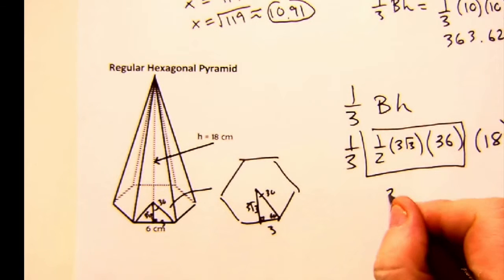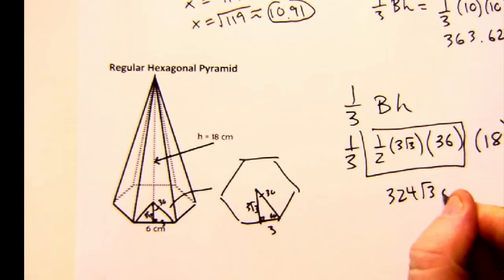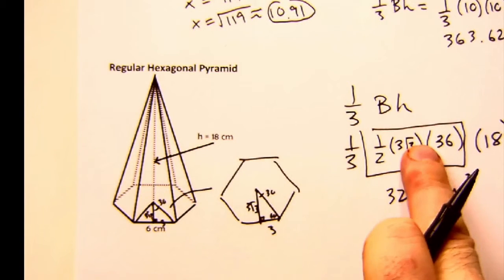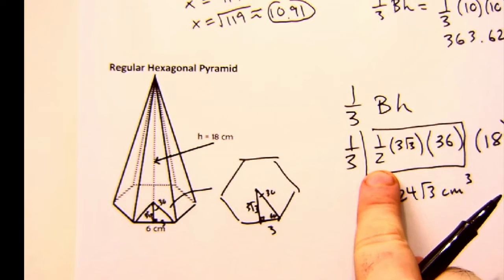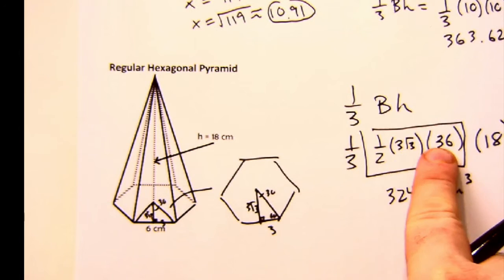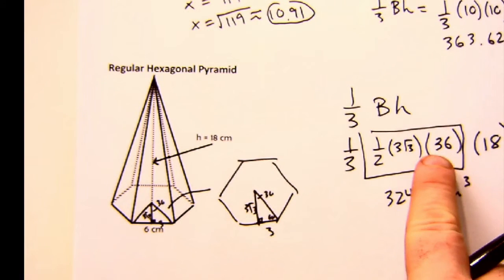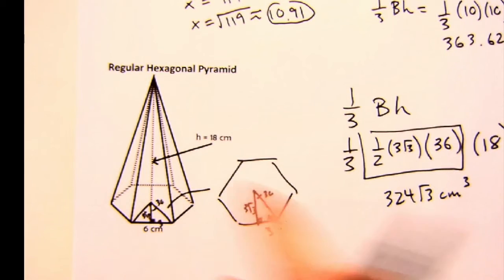I multiply all that together and I get 324 root 3 centimeters cubed. Awesome. One-third the base times the height. The base was a regular hexagon, so it's one-half ap. I found the a by running my thirty-sixty-ninety special triangle there, and my perimeter is of course six times six. So we got lots of good calculation and thinking there.